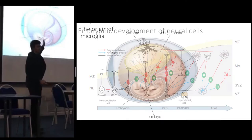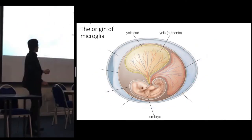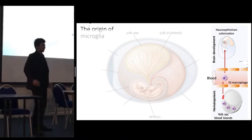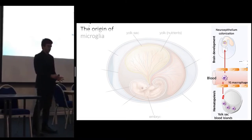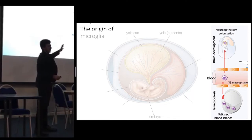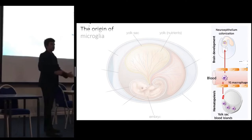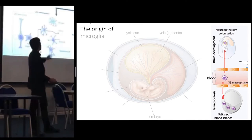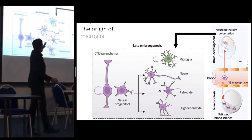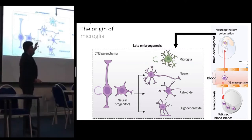Microglia come from the yolk sac. The yolk sac blood islands produce blood cells, which produce primitive macrophages. These primitive macrophages then travel through the bloodstream until they reach the brain, where they colonize it, enter it, and multiply — and that's how the microglia join the rest of their friends.